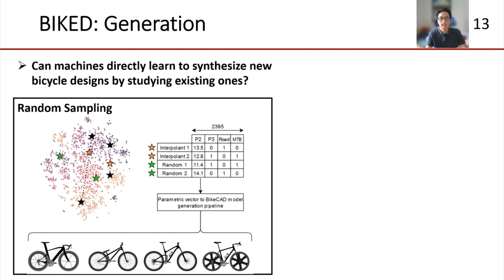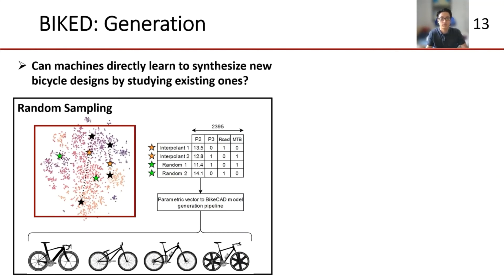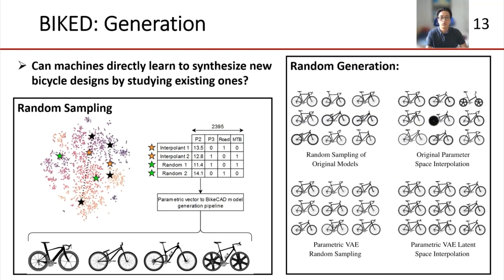Now we consider the task of synthesizing random models. One approach is to randomize our interpolation process by selecting two arbitrary points and interpolating an arbitrary distance between the two of them — represented by selecting the orange points from randomly sampled original designs in black. Another approach is to randomly sample green points from the latent space with some boundaries dictated by the distribution of the design space. We can perform these sampling methods in the original parameter space or in an embedding space. Considering that we have just trained an algorithm to generate completely novel bicycle designs simply by studying existing data, these results are quite promising.